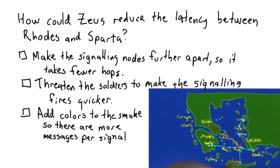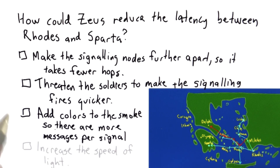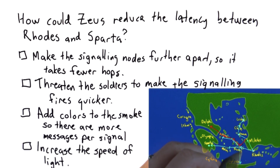He could find a way to send different colors of smoke instead of just one. That would mean that with the same amount of smoke, you could send more different messages. Or he could increase the speed of light, which would mean that the soldiers at each signaling point would see the previous smoke signal more quickly than they do now.